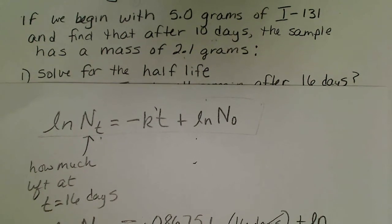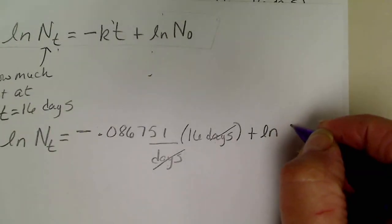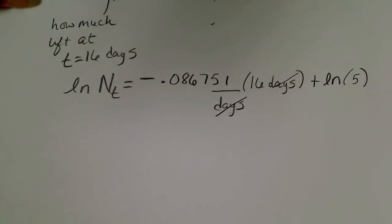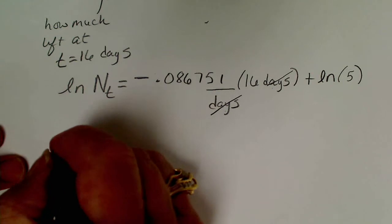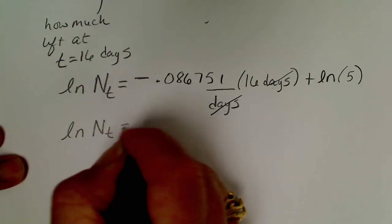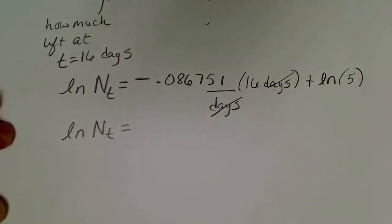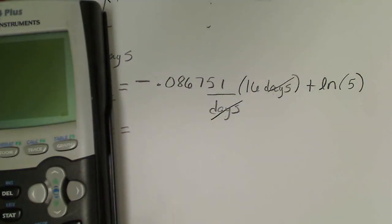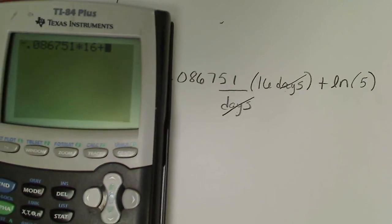Then that is plus the natural log of the original amount which was 5 grams. Our initial problem, we began with 5 grams of iodine-131, so I'm going to just take the natural log of 5. I'm going to rewrite the natural log of Nₜ and then process through that. That's negative 0.08675 times 16 plus the natural log of 5.